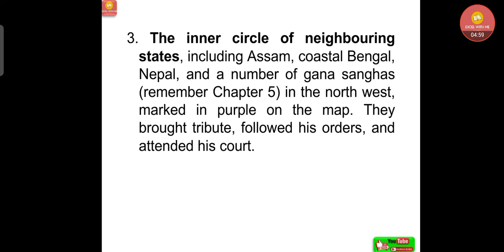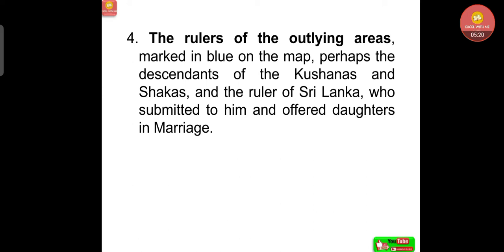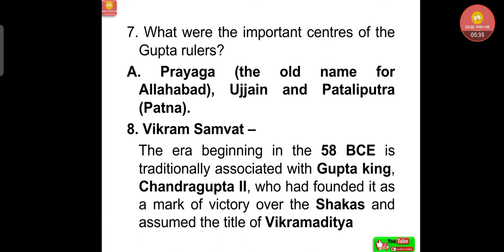The Gana Sanghas — which we learned about in Chapter 5 — are in the northwest, marked in purple on the map. They brought tribute, followed his orders, and attended his court. The fourth kind: the rulers of the outlying areas, marked in blue on the map — perhaps the descendants of the Kushanas and Shakas, and the ruler of Sri Lanka — who submitted to him and offered daughters in marriage.